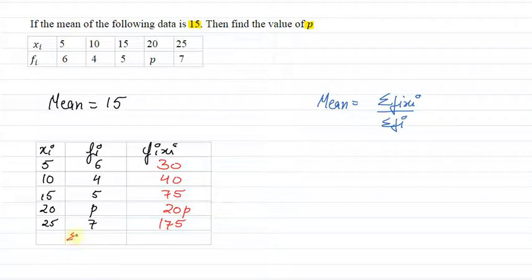Summation of fi xi, if we have to find total, summation of fi xi is 30 plus 40 plus 75 plus 20P plus 175 equals 320 plus 20P. This is going to be equal to 320 plus 20P.